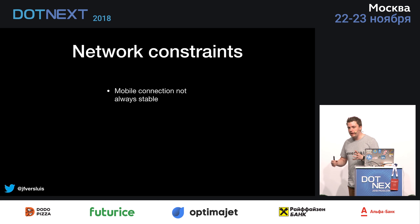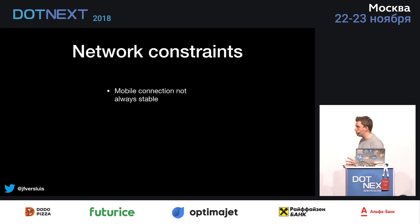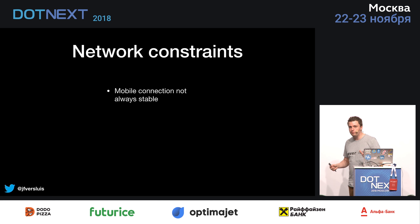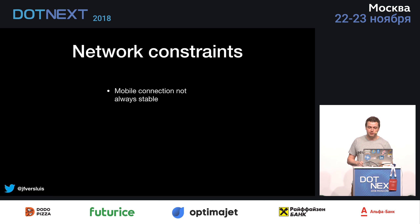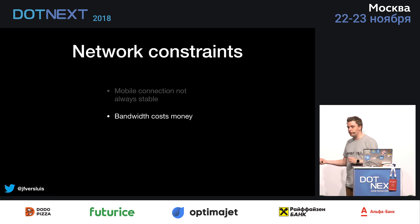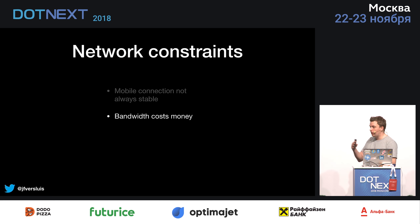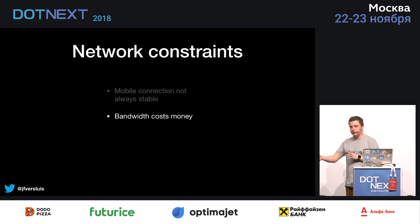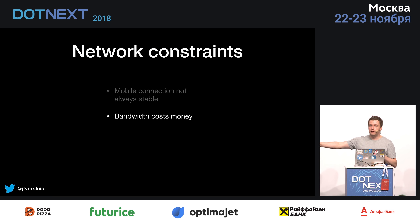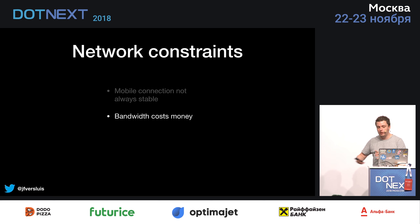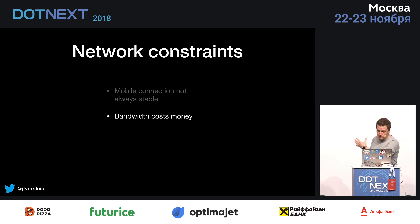Network constraints are where a lot of pain comes from. Mobile connections are not always stable — whenever I drive through a tunnel in the Netherlands, my connection is just gone. If you do not think about this upfront, your app will just crash. Bandwidth costs money. We don't have unlimited data plans, so each request that you do costs money to your user. Think about caching — don't get data whenever you already have it, because it will just cost more money for data you already have on your device.